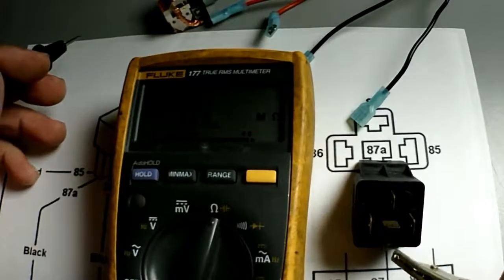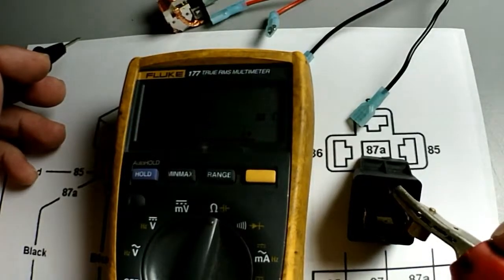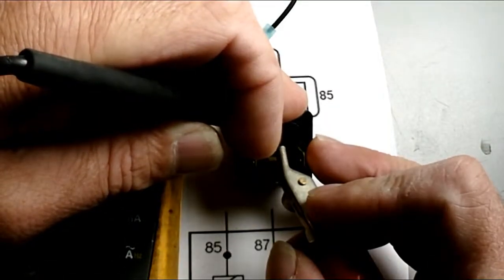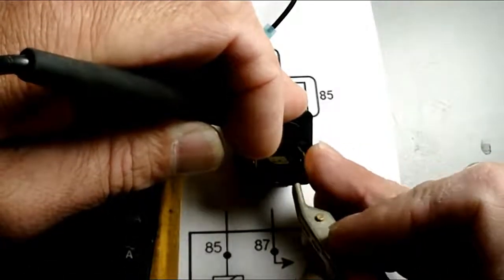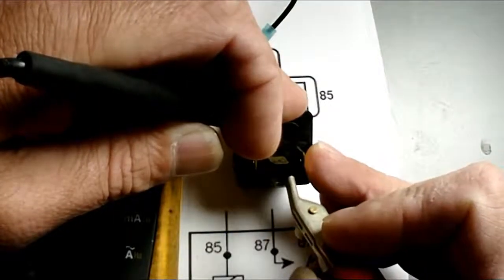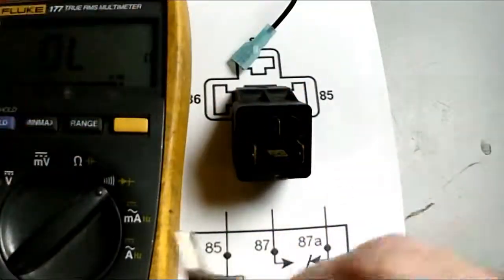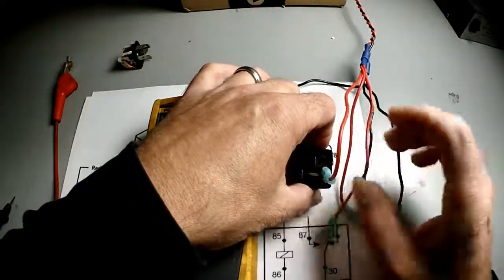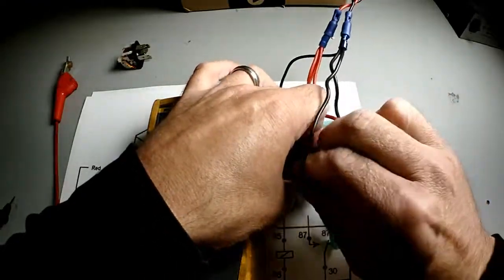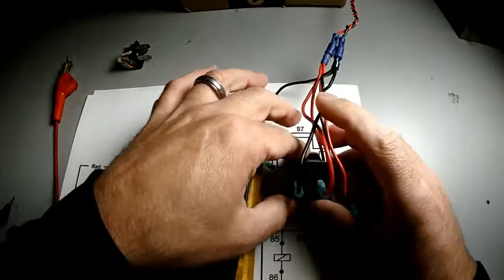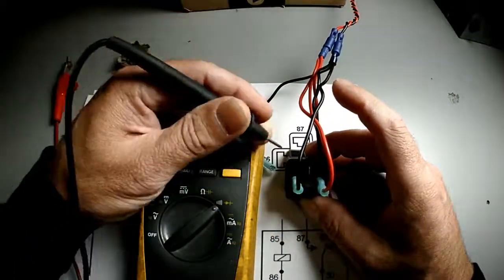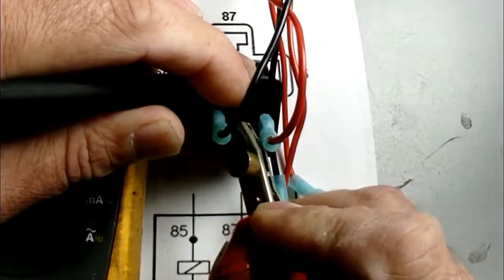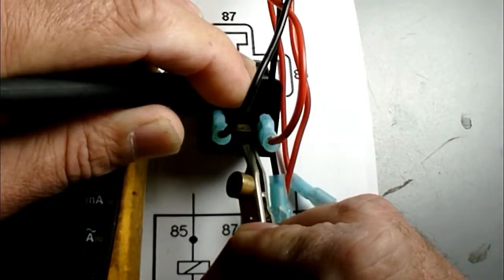So on this relay, this is 87, this is 87A, and this is 30. Right now if I meter between 30 and 87A, they are connected. If I meter between 30 and 87, there's nothing. Now if I charge the coil using power and ground, you can see that 87A no longer is connected, but 87 is.